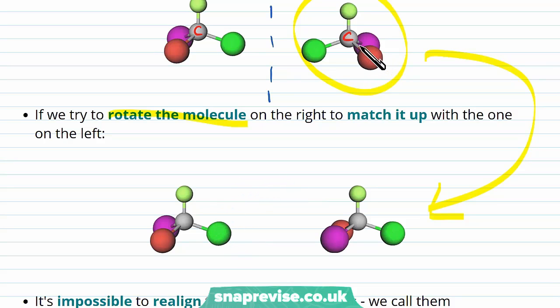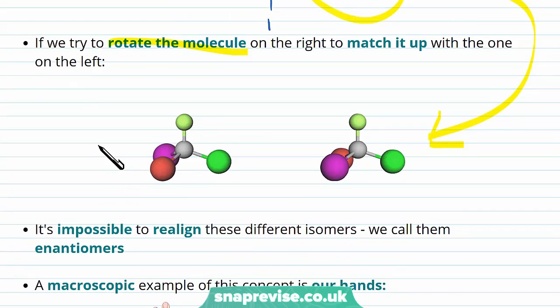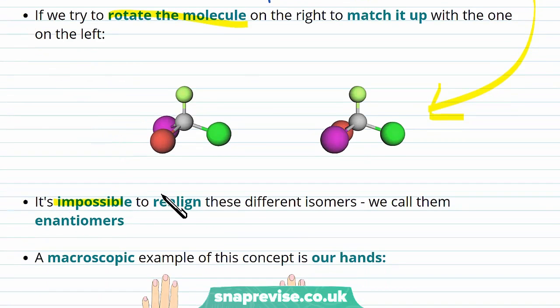But as we've turned it round to put the green atoms on the same side, so they're both pointing to the right, our pinkish maroon atom is now pointing out towards us, whereas in the other one it's pointing away from us. As you can see it's impossible to realign these two different isomers, and the name we give them is enantiomers.